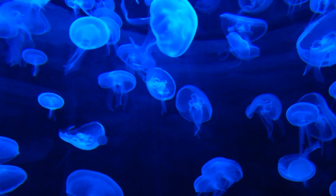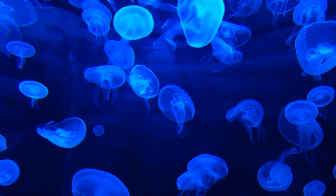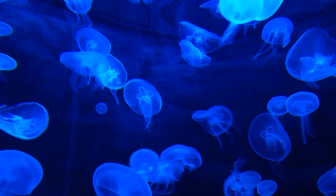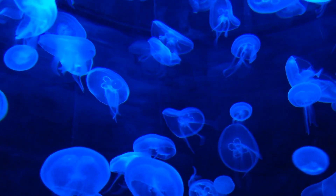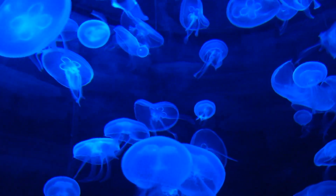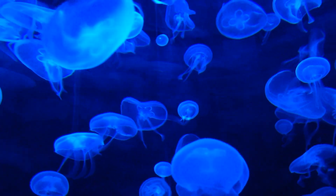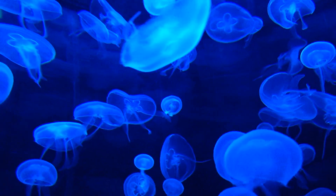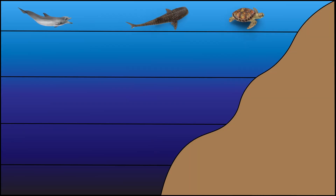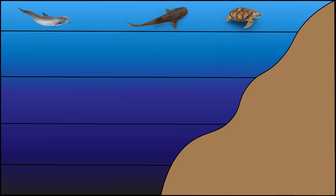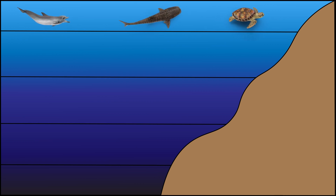Essentially, these organisms have a special ability to create their own light, adding a touch of magic to the mysteries of the underwater world. The ocean can be divided into different layers or zones based on temperature and sunlight penetration.